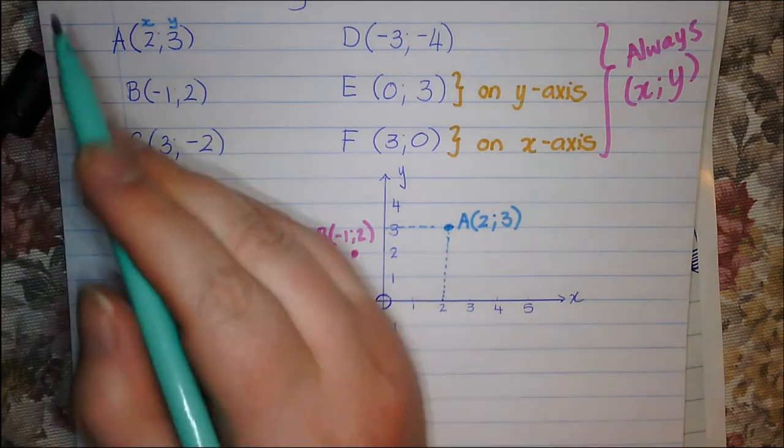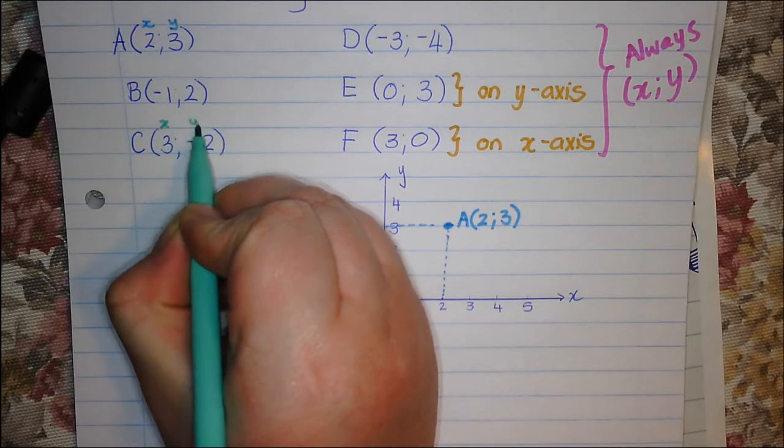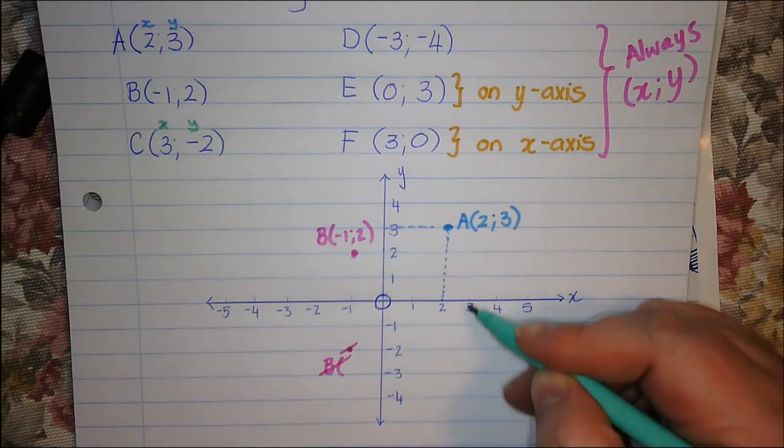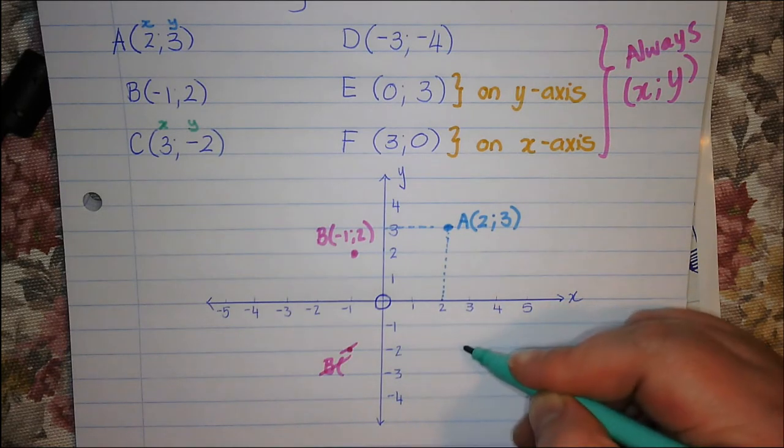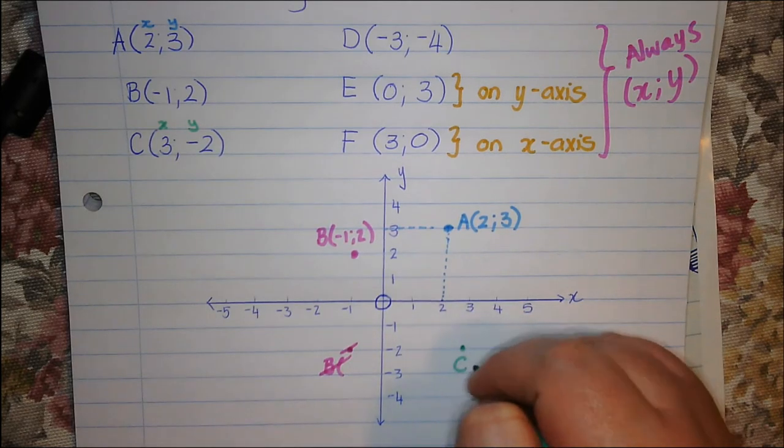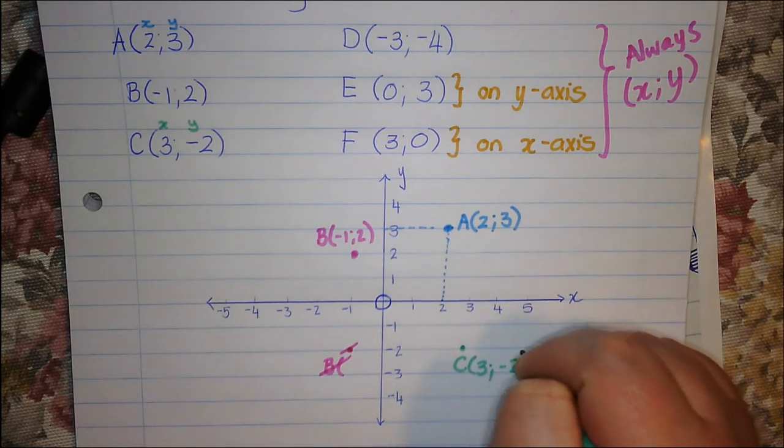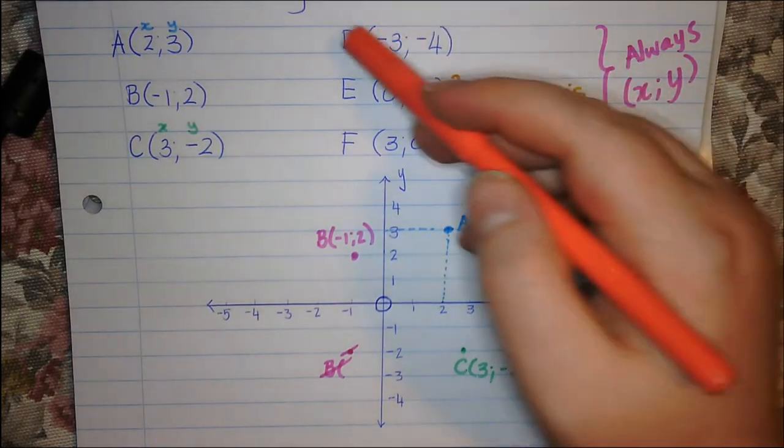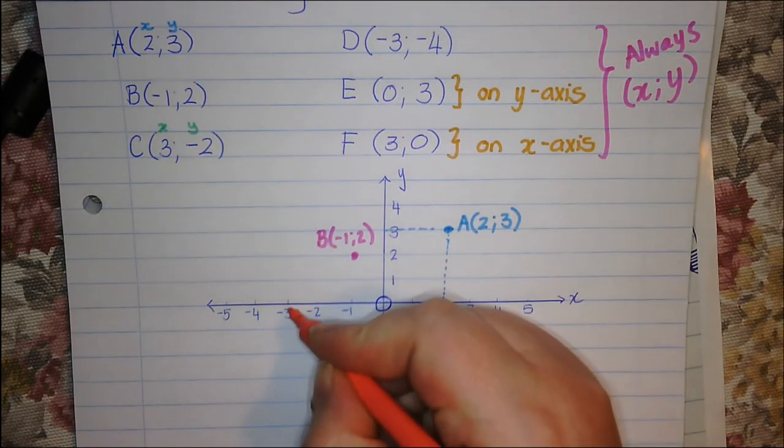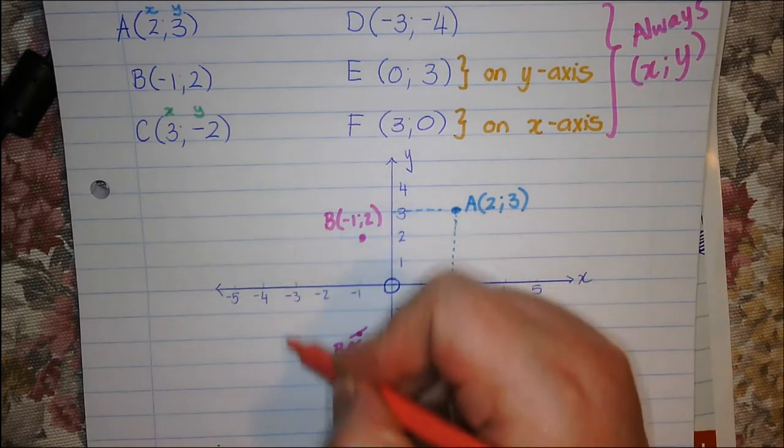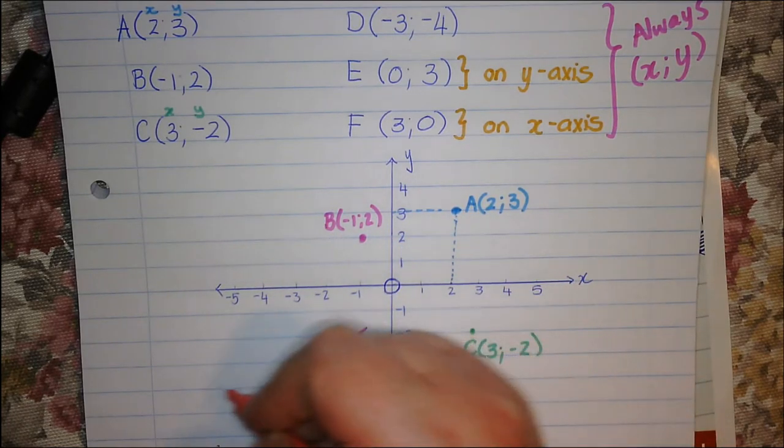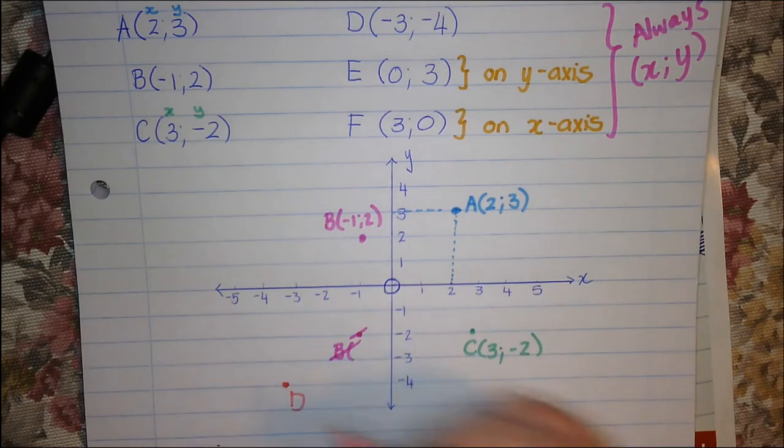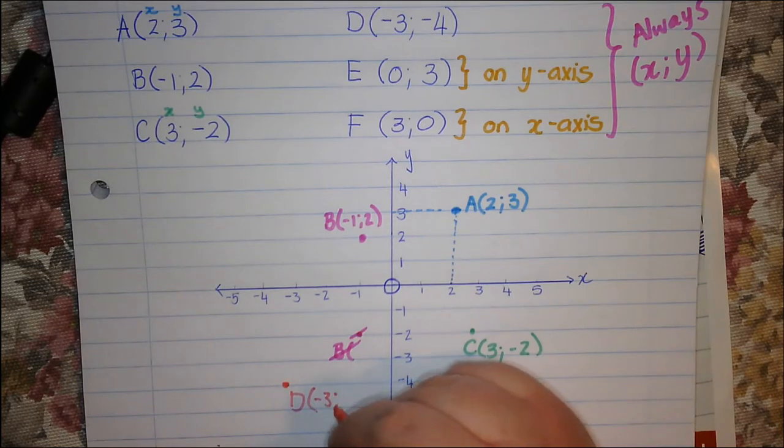Then over here, this is my x-axis and my y-axis. x-axis over 3 and then negative 2. x, 3, y, negative 2. So there. That's my point C. 3 and negative 2. Then let's try for D. Negative 3 and negative 4. Negative 3 is over here on the x-axis and negative 4 is over here on the y-axis where the 2 meet. That's my point D. That's negative 3 and negative 4.